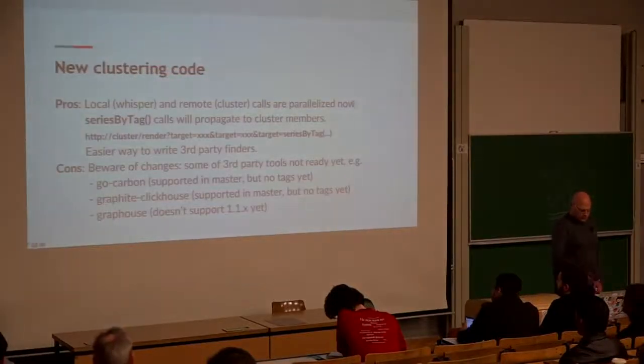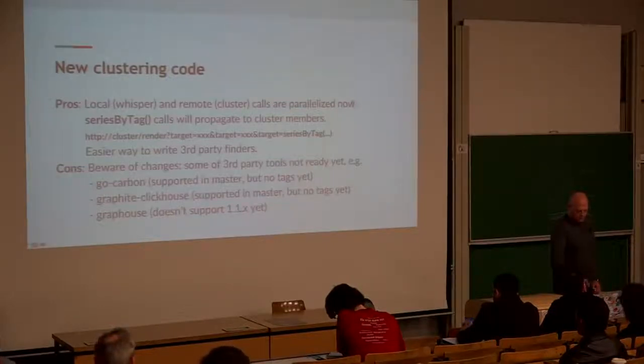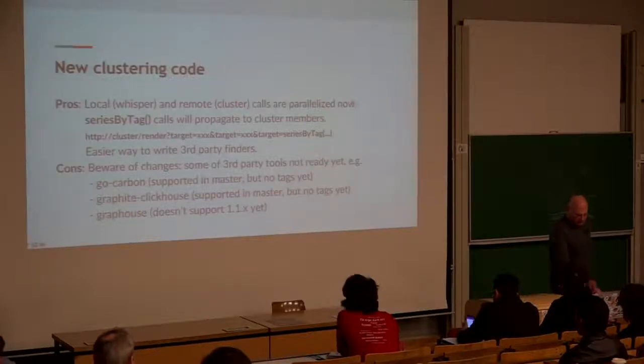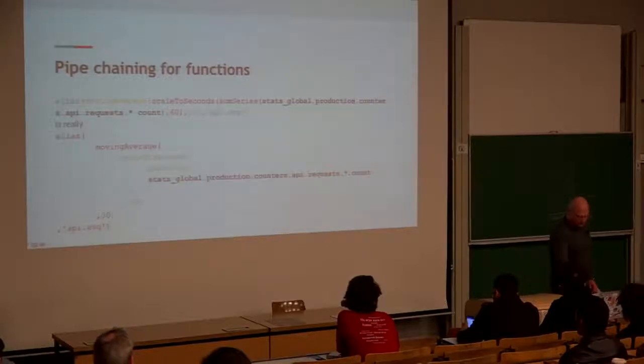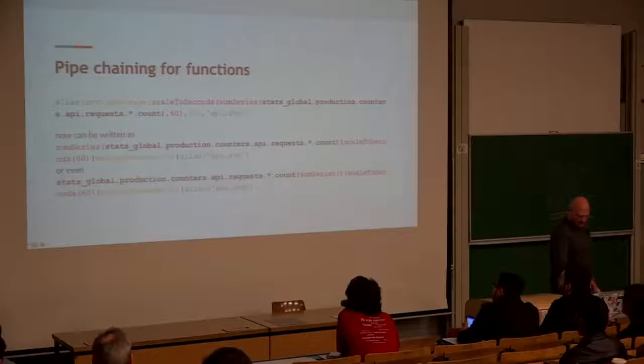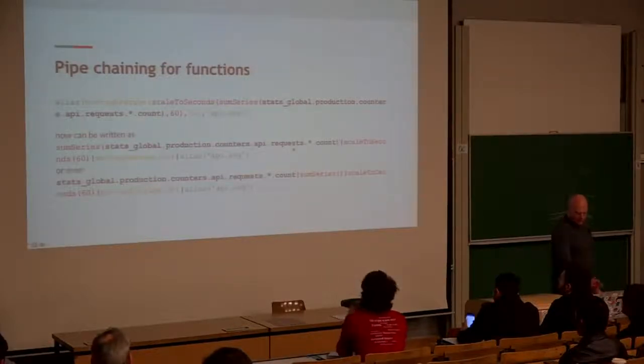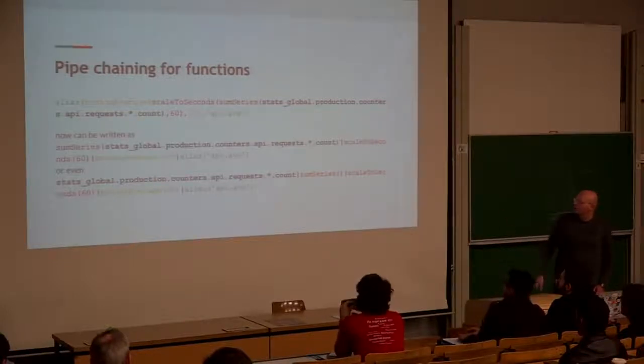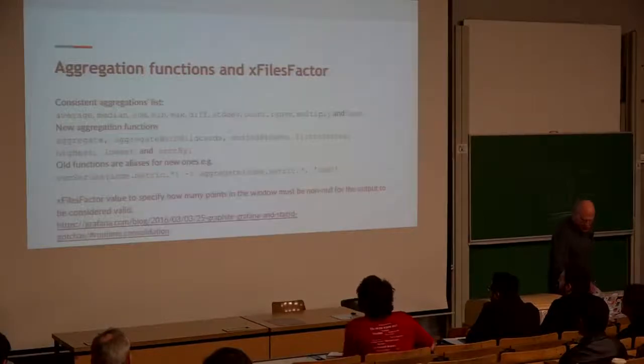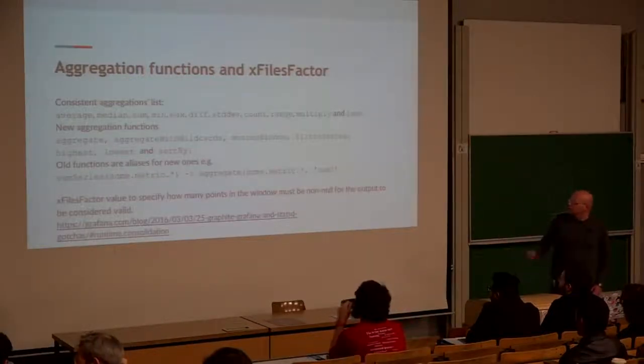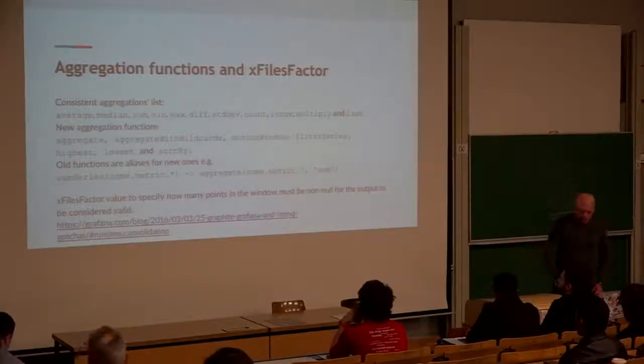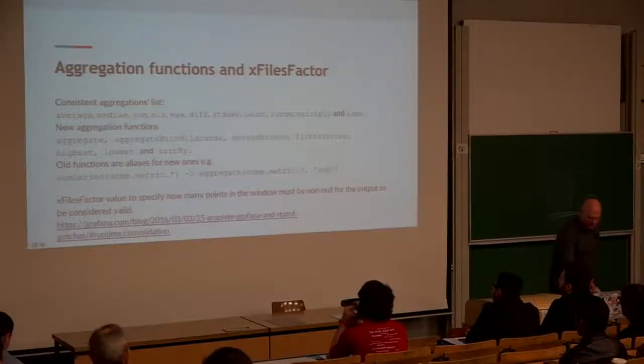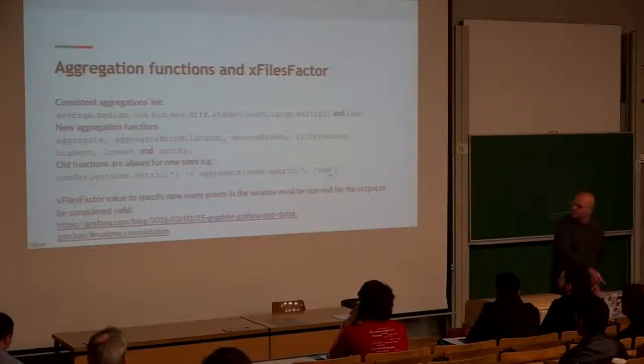New clustering code - very short: all calls, remote and local, are parallelized. The speed is increasing, but it's not fully compatible with existing components. We should - I'm probably running out of time. Very fast. Pipe chaining: now you can delimit your functions with a pipe symbol, and read them similarly to functional programming or bash piping. It's much easier to read now. And aggregation functions were also reworked. Now these functions support all aggregations: sumSeries is aliased with aggregation parameter 'sum', averageSeries aggregated with 'average' parameter, et cetera. There's also xFilesFactor support, same as in Whisper, so we can set how many points are needed for your function.